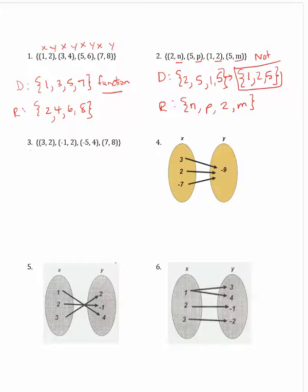Question 3 is a relation: (3, 2), (negative 1, 2), (negative 5, 4), and (7, 8). So the domain is the set of the x's: 3, negative 1, negative 5, and 7. In order, that would be negative 5, negative 1, 3, 7.